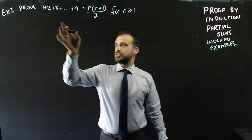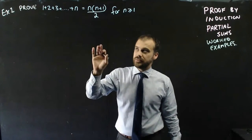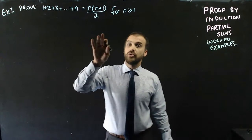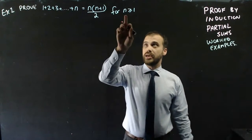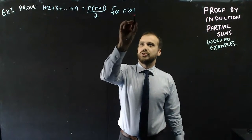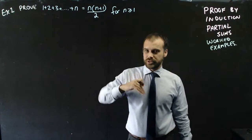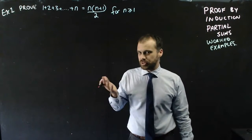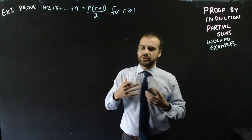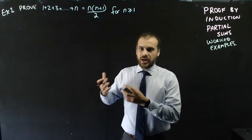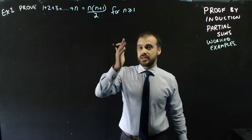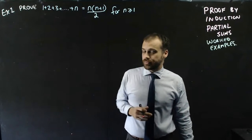Prove that 1 plus 2 plus 3 plus dot dot dot plus n equals n(n+1) over 2, for n greater than or equal to 1. A lot of people gloss over this condition, but it's really important because sometimes a partial sum only works for certain values of n. In this case, n must be 1 or greater.